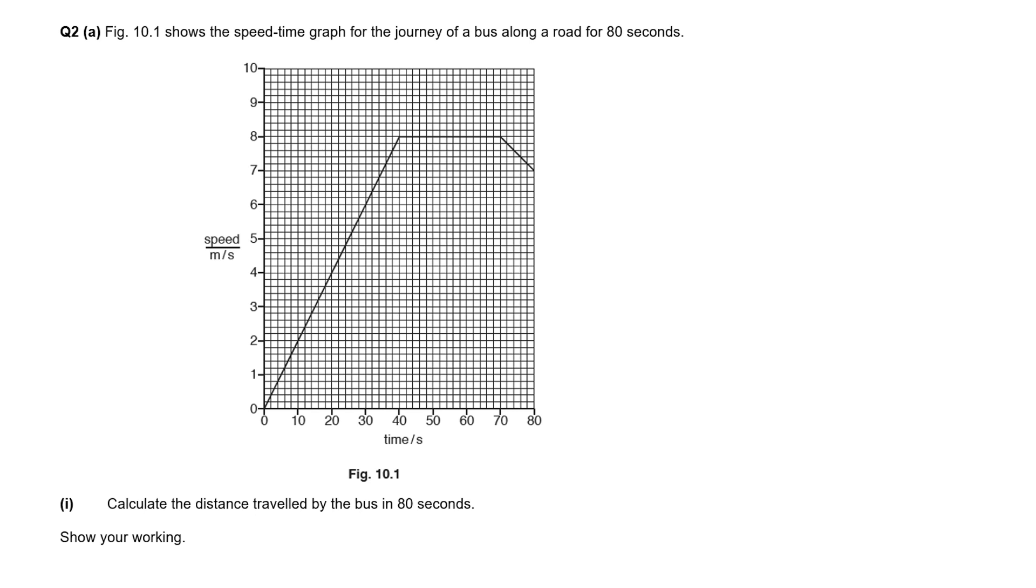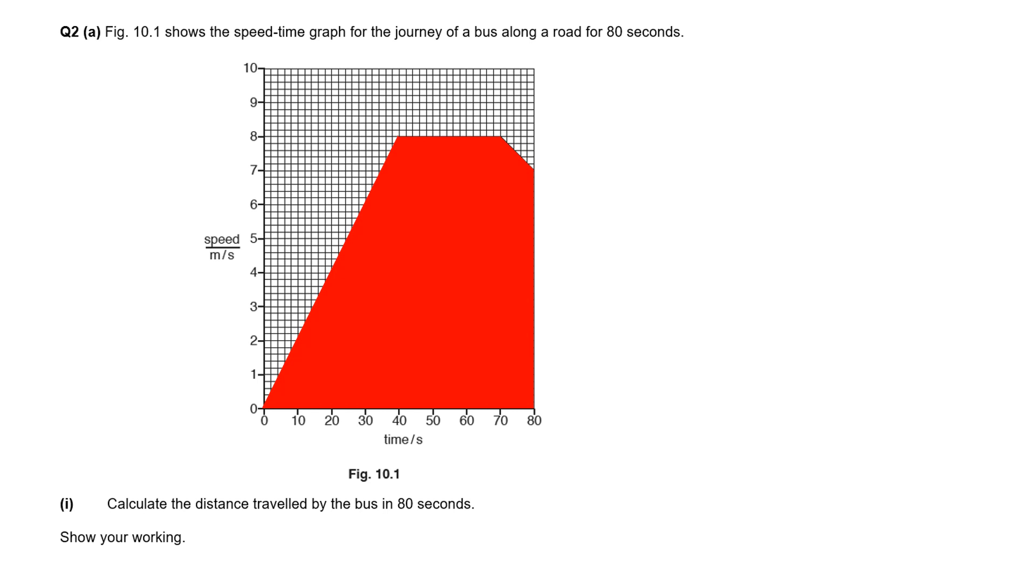We've got a speed versus time graph for the journey of a bus along a road for 80 seconds. Calculate the distance traveled. The thing you need to know is the distance traveled is the area under the graph. I've divided it up into a triangle, a rectangle, and a trapezium. So we've got 0.5 times 40 times 8 for the triangle, 30 times 8 for the rectangle, and half times 7 plus 8 times 10 for the trapezium, giving us a total distance of 475 meters.